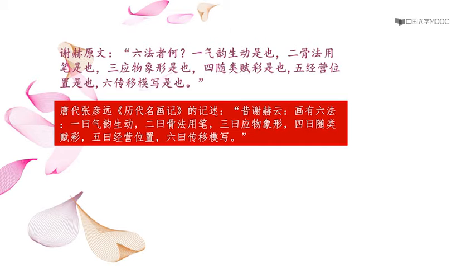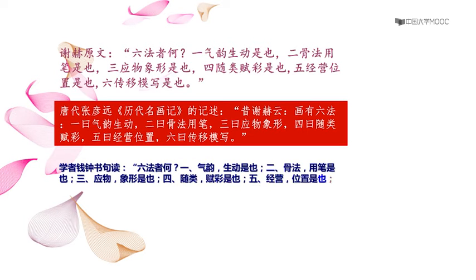但回头看谢赫的原文,会发现不太一样。人家说,一气韵生动是也,和张彦远的「一约气韵生动」其实不太一回事,因为你加了一个「约」,整个的句读就发生变化了。近代学者钱钟书是这样断句的:六法合也。一,气韵,生动是也。二,骨法,用笔是也。三,应物,象形是也。四,随类,赋彩是也。五,经营,位置是也。六,传移,摹写是也。